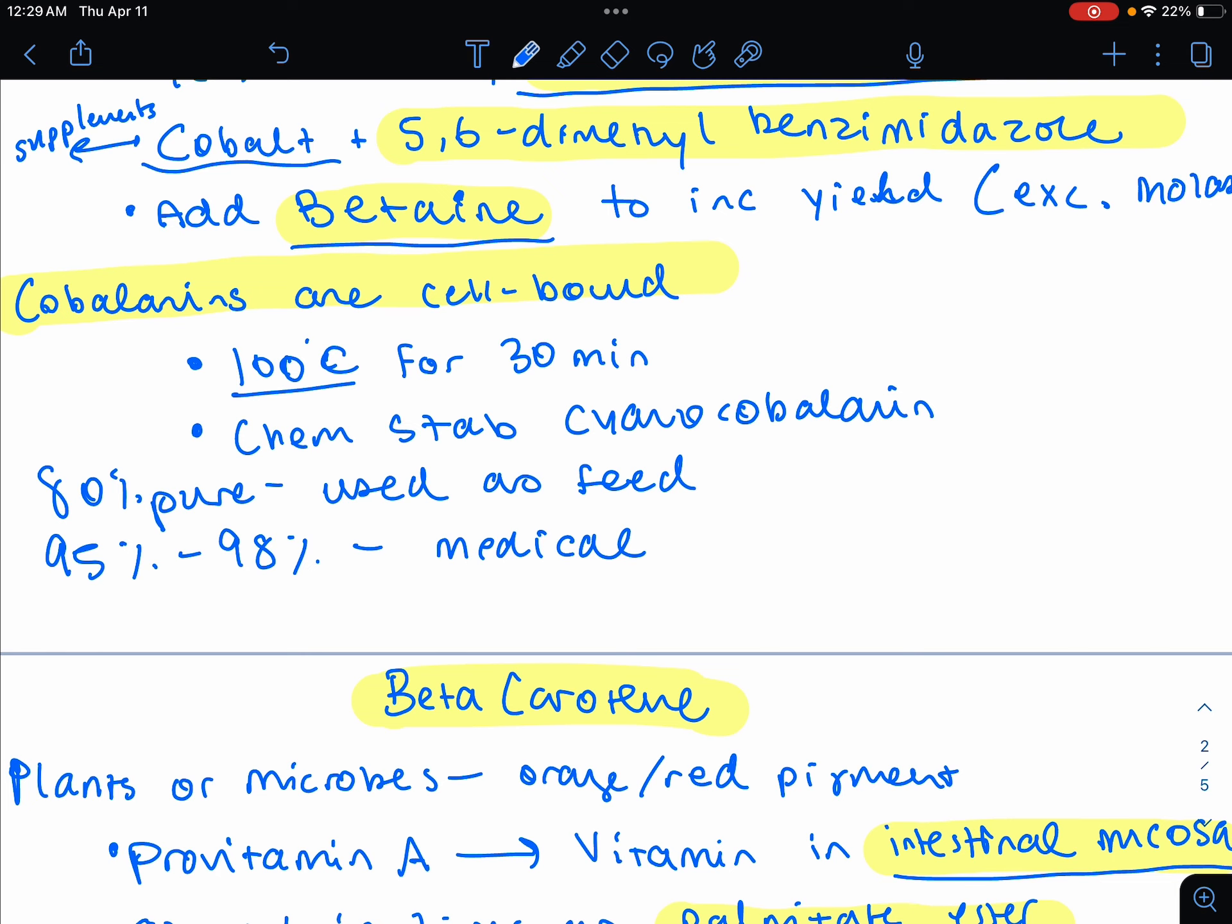Then you're going to convert it to the chemically stable cyanocobalamin. This is the actual B12, by the way. If you want an 80% purity, you could just use it as a feed additive. However, the medically usable preparations would need you to get to 95-98% instead of 80%.